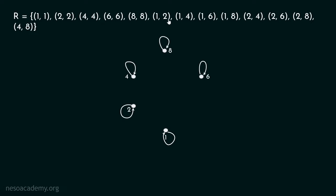We must draw an edge from 1 to 2, because 1 is related to 2. The arrow must point to vertex 2, because 1 is related to 2 but 2 is not related to 1. This relation is anti-symmetric, so if 1 is related to 2, then 2 must not be related to 1. That's why an edge is drawn with the arrow pointing to vertex 2.